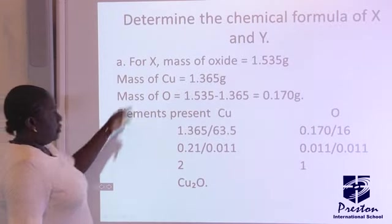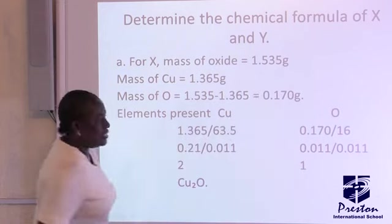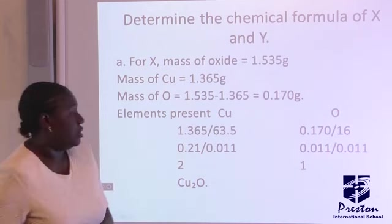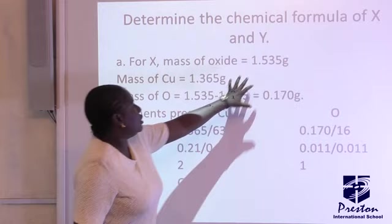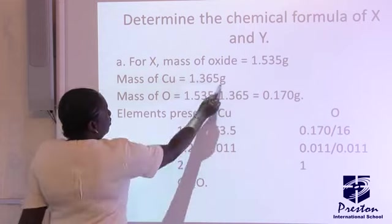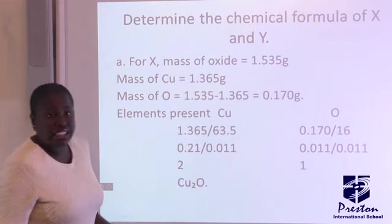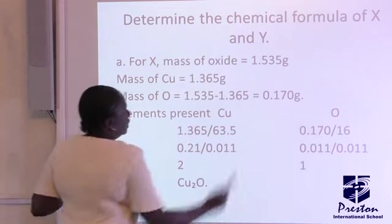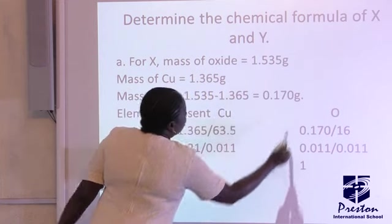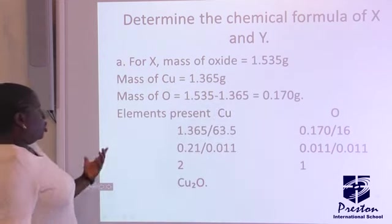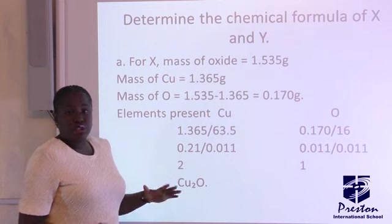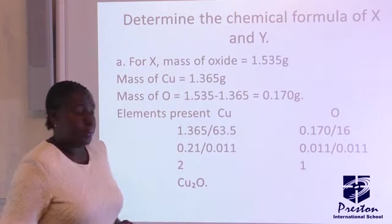So let's look at this. For X, the mass of the oxide, we are told, is 1.535. Remember, your oxide, that means for copper oxide, that means combination of copper and oxygen. We have the mass of the oxide, and we're given the mass of copper from the question to be 1.365 grams. Now, what comes to mind? How do you get your mass of oxygen? You deduct this from this. So, your mass of oxygen is going to be 1.535 minus 1.365, and that's going to give you 0.170 grams. So, knowing the various masses now, we proceed.